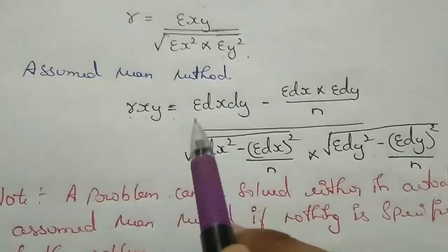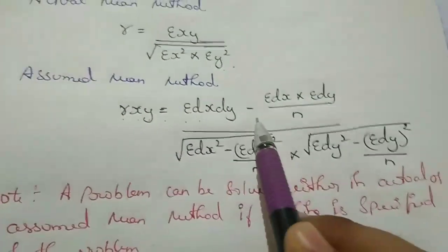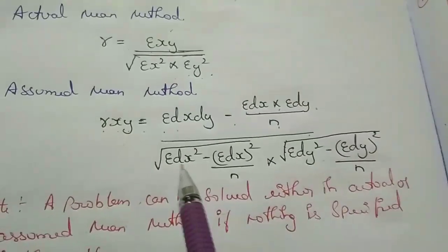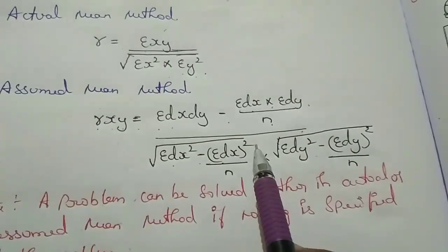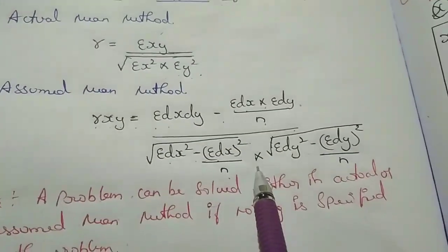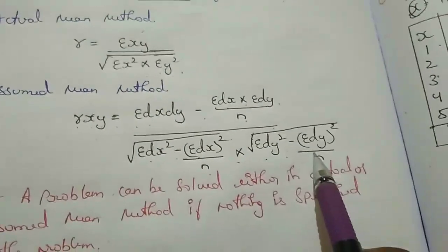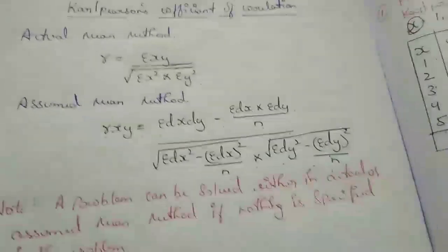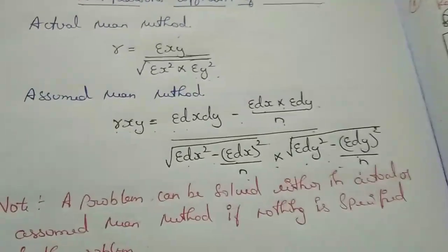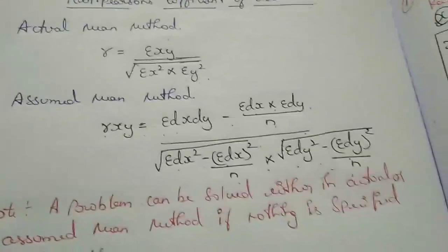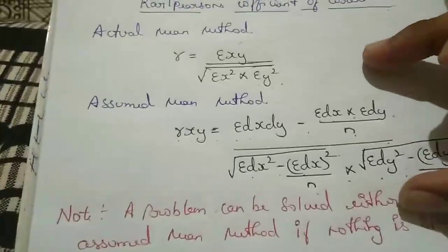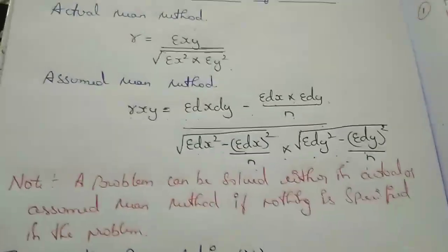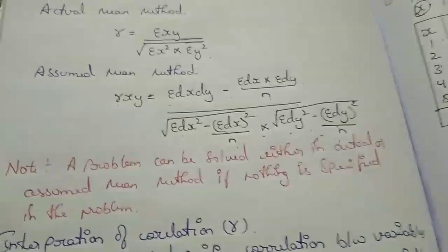r_xy is equal to: sigma dx·dy minus (sigma dx into sigma dy) divided by n, all divided by the square root of [sigma dx squared minus (sigma dx) squared divided by n] into the square root of [sigma dy squared minus (sigma dy) squared divided by n]. You should memorize this formula and practice it many times. This is the formula of Carl Pearson's coefficient of correlation, which is very important — it may come for 14 marks or 6 marks.